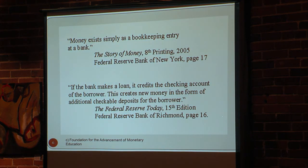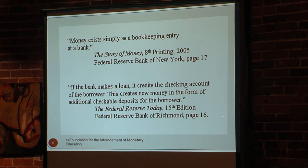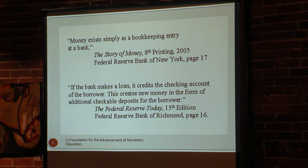The Federal Reserve, through every one of its 12 regional Federal Reserve banks plus the Board of Governors, has something they call the Public Information Department. This is akin to Joseph Goebbels' Ministry of Propaganda and Public Enlightenment — they're supposed to tell you how great the Federal Reserve is and what they're doing for us. In effect it's just spin to protect themselves. But some of their publications do come clean. One of them, called The Story of Money, says money exists simply as a book entry.